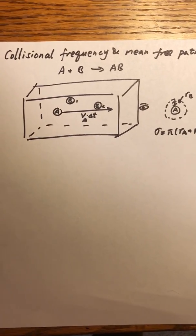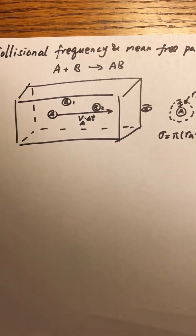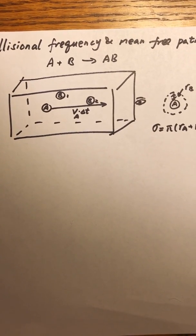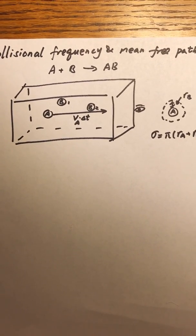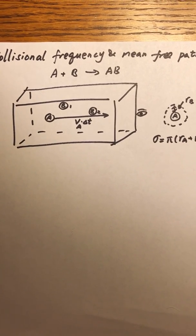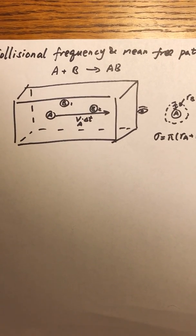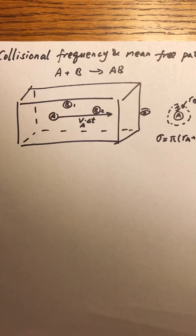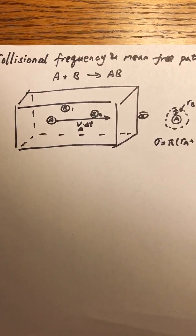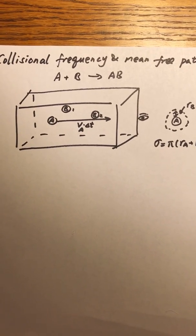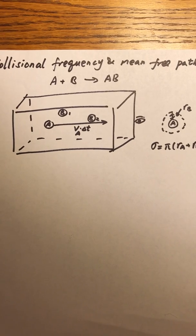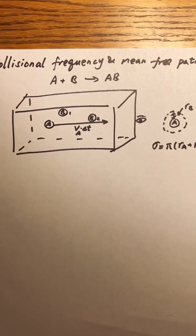I drew a big box, and inside the box I drew only one A molecule and two B molecules. We assume molecule A is traveling straight at a speed V sub A, and it has traveled for a time period delta T. Therefore, the distance it has traveled is VA times delta T. The question is: will A collide with B1? Probably not. Will A collide with B2? Probably yes.